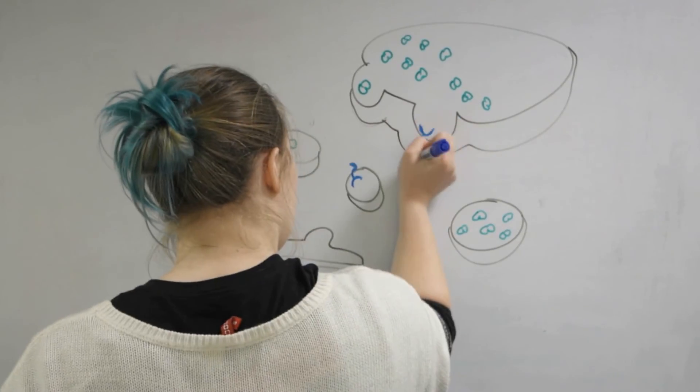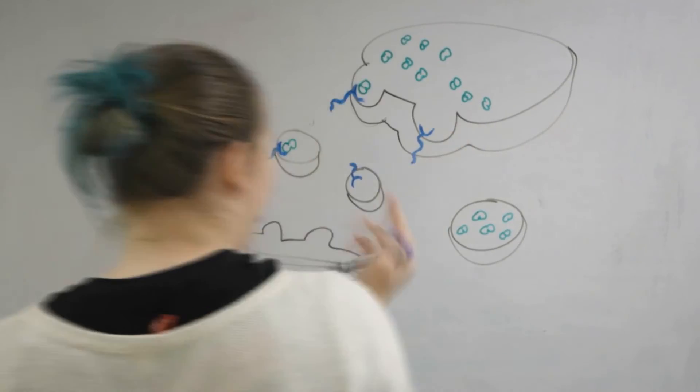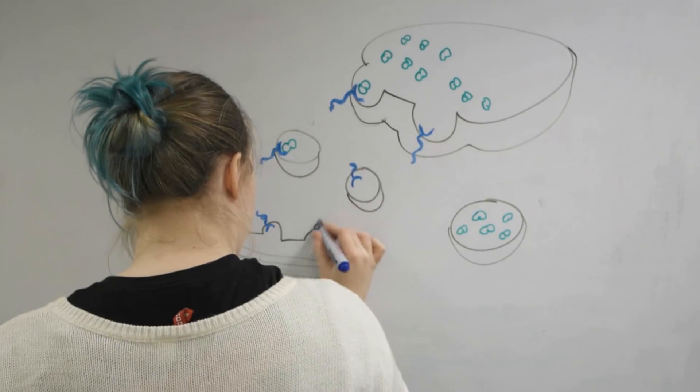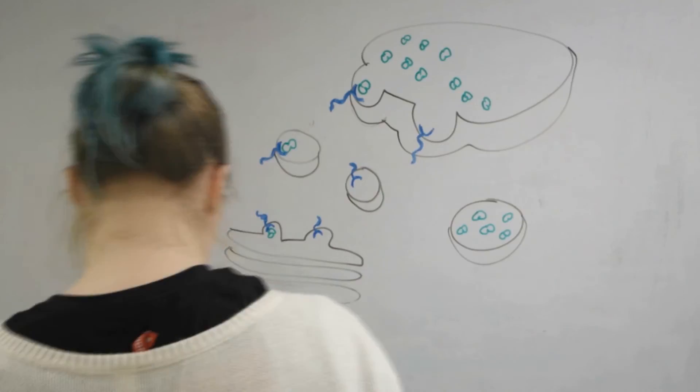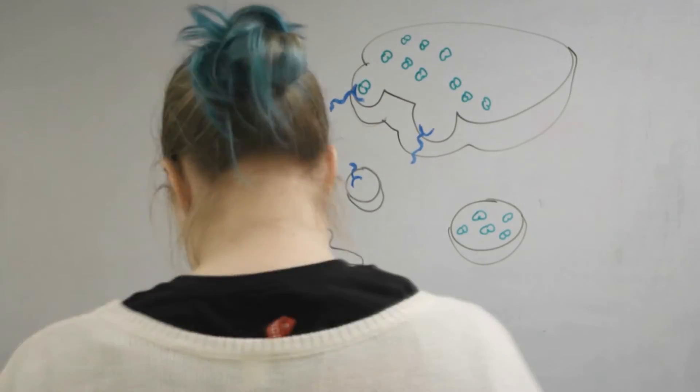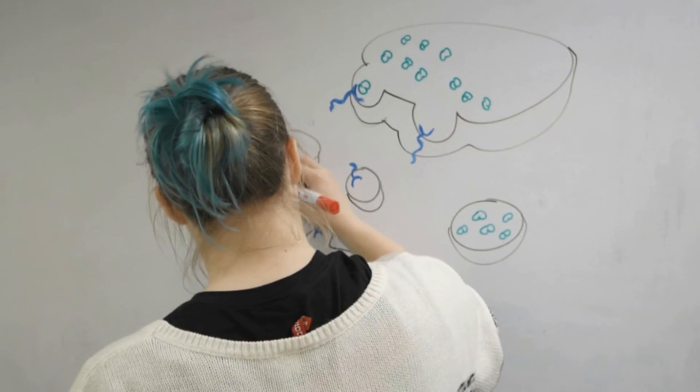They are transported using an attachment to a mannose 6-phosphate which then will attach to the mannose 6-phosphate receptors which is drawn here in blue in the Golgi apparatus.